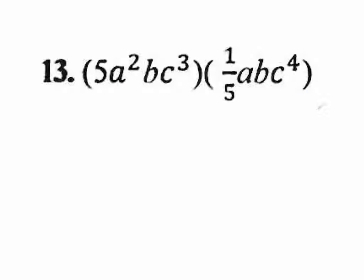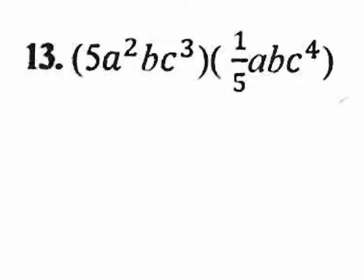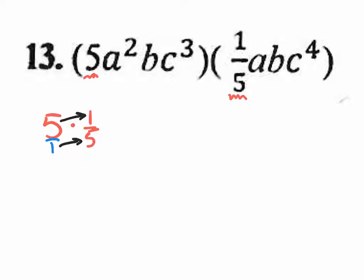Number 13 — a lot of people get confused here. Start by multiplying the coefficients: 5 times one-fifth. Write it as 5 over 1 times 1 over 5, multiply top with top and bottom with bottom — you get 5 over 5, which is 1. So those coefficients cancel out. Now for the a's: a squared times a to the 1 gives you a to the third.